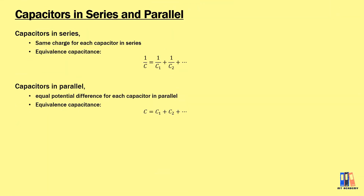Moving on to capacitors in series and in parallel. For capacitors in series, remember that each capacitor carries the same charge. For capacitors in parallel, each capacitor has equal potential difference. This is quite similar to resistors — resistors in series have the same current, and resistors in parallel have the same potential difference.